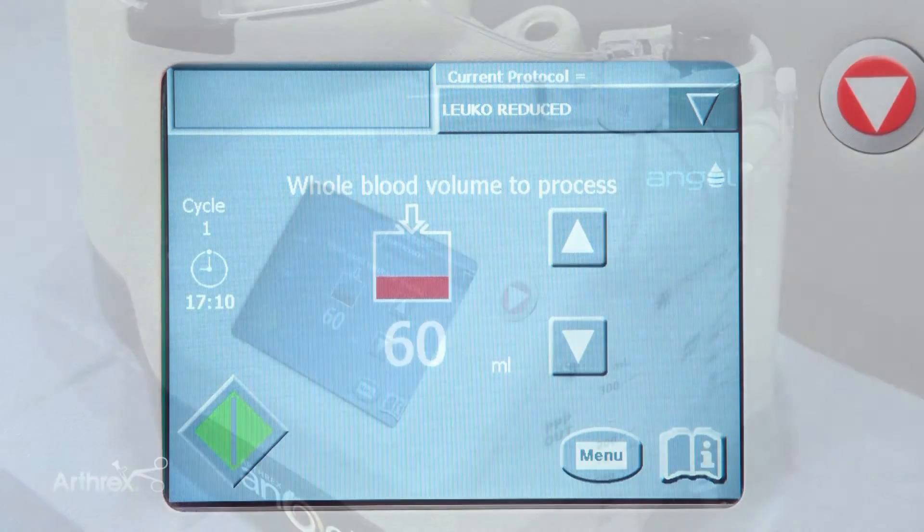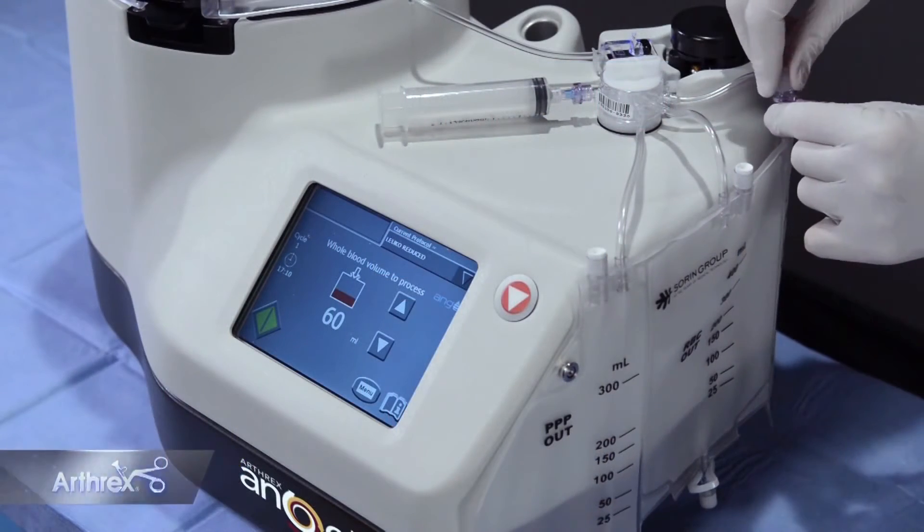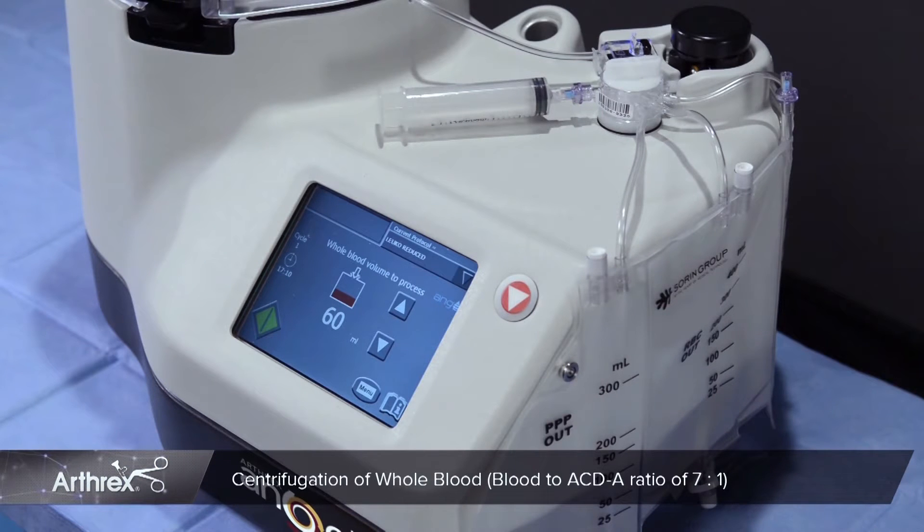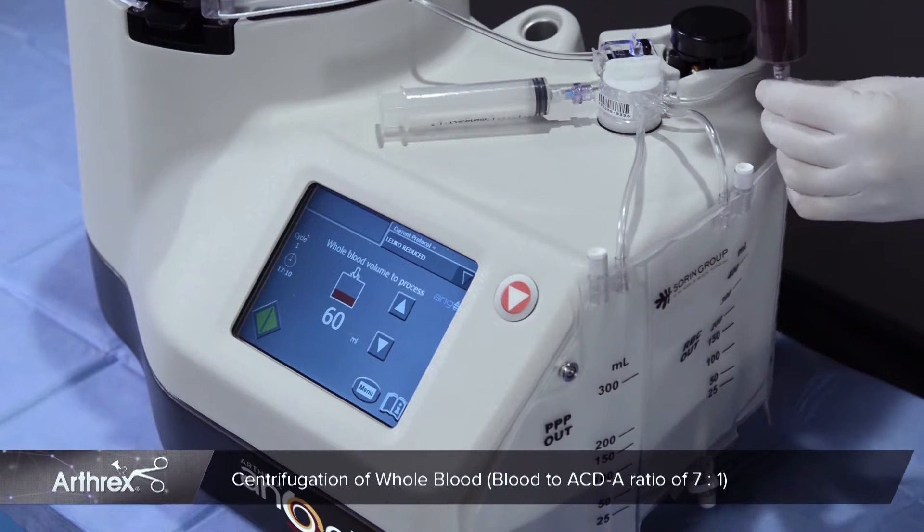Press disposable set is loaded to advance to the next screen. Centrifugation of whole blood requires ACDA at a ratio of seven to one.